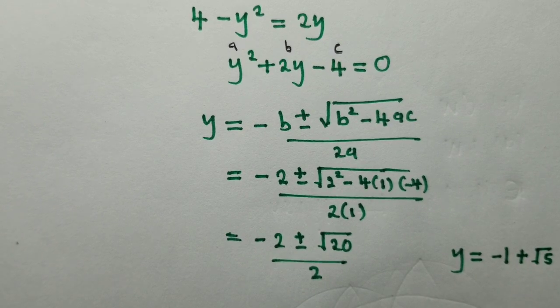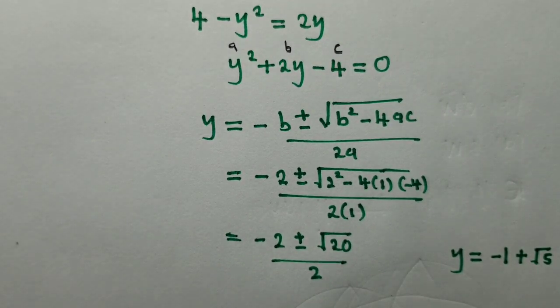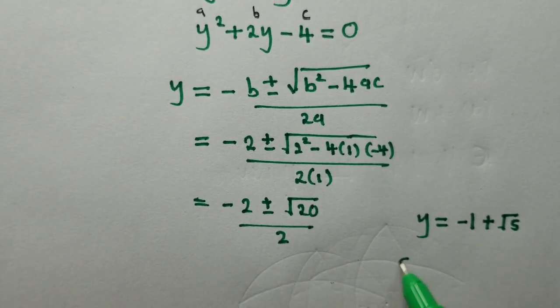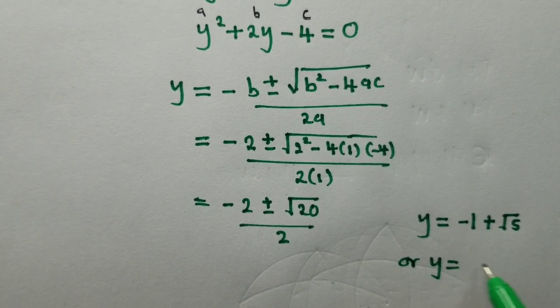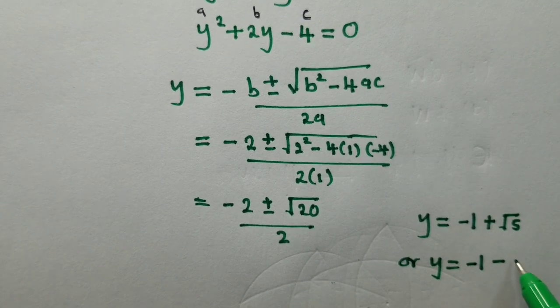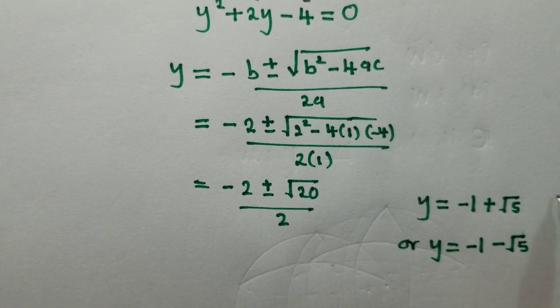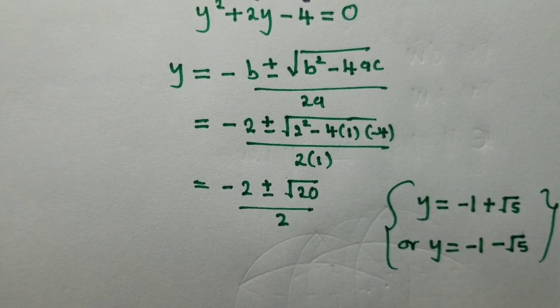Or in other ways, we can say our y would be equal to negative 1 minus root 5. So these are the two y values.